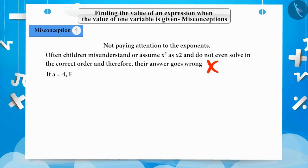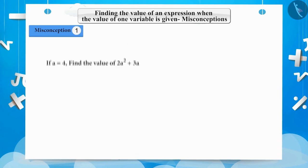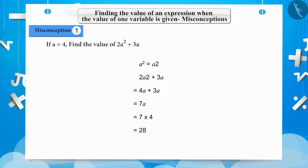If a is equal to 4, then find the value of 2a square plus 3a. Children often misunderstand a square as a2 and solve it this way: 2a2 plus 3a is equal to 4a plus 3a is equal to 7a is equal to 7 multiplied by 4 is equal to 28. The obtained answer is 28, which is wrong.